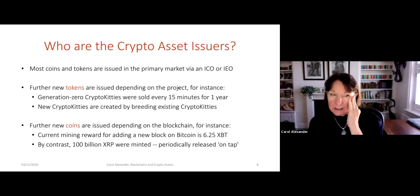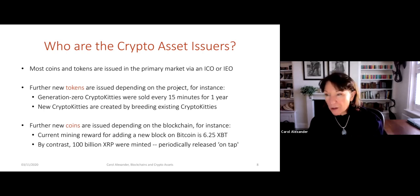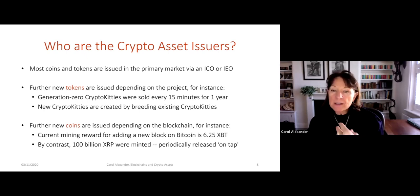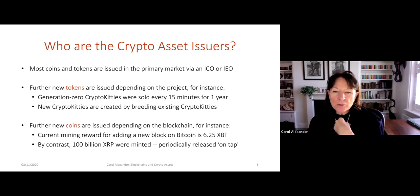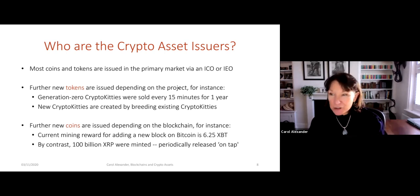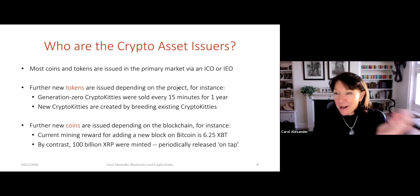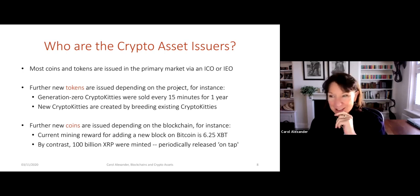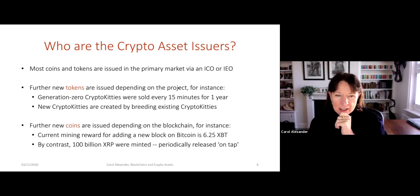Now, what about the crypto asset issuers? Most coins and tokens are issued on the primary market through an initial coin offering or an initial exchange offering — that's the usual way. If they're tokens, it depends on the project. A nice example: Generation Zero CryptoKitties were sold one every 15 minutes for a year. Then in the CryptoKitties game, they're mated together to create new types of CryptoKitties which could have great pedigrees, and these are sold on — some for very high prices. That's how you create new tokens in CryptoKitties; it all depends on the project.